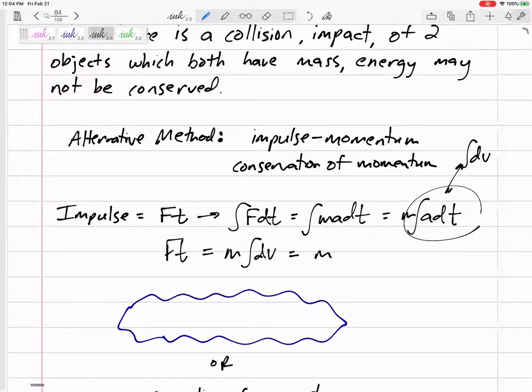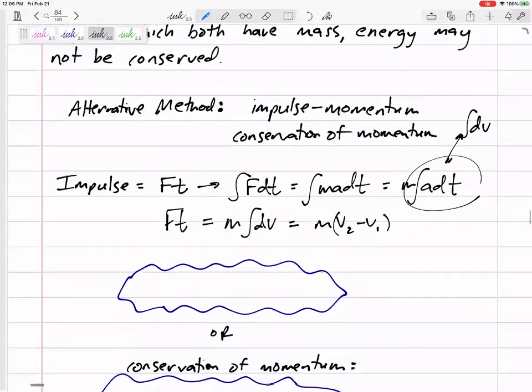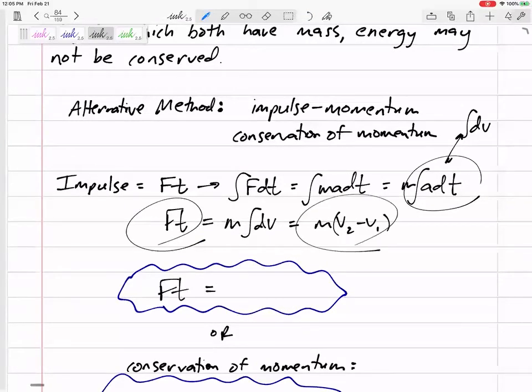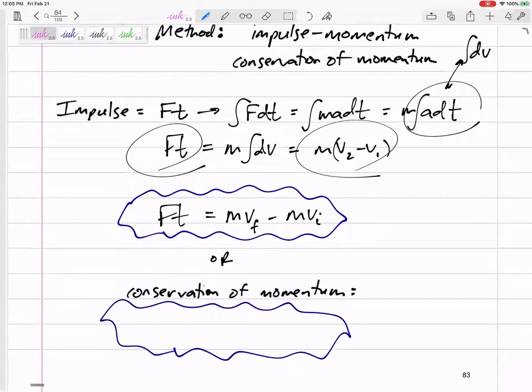What's the integral of a dt? It's the integral of dv, so m integral dv. What is the integral of dv? It'd be v2 minus v1, or v final minus v initial. So impulse Ft equals m v final minus m v initial. The impulse is equal to the change in momentum.